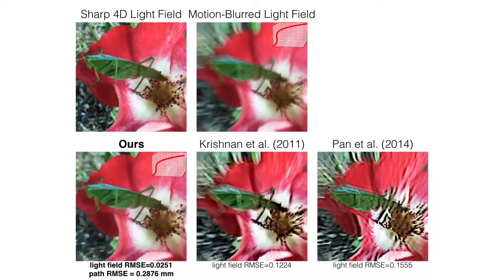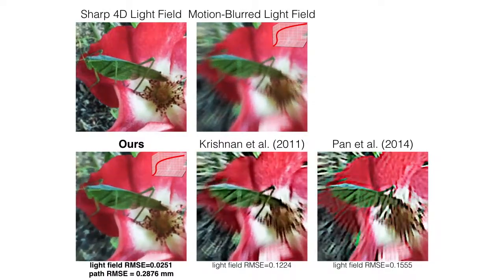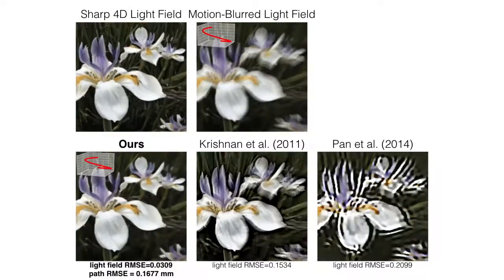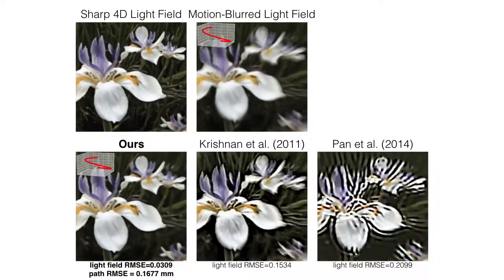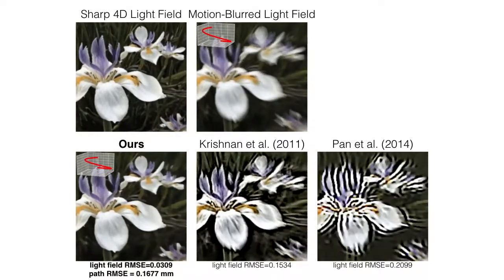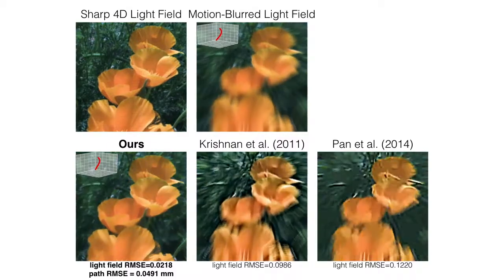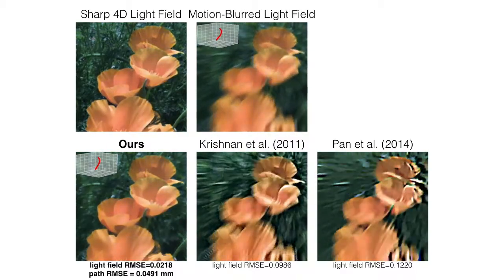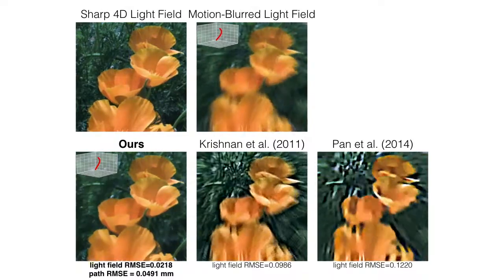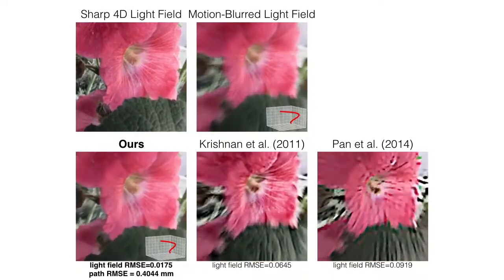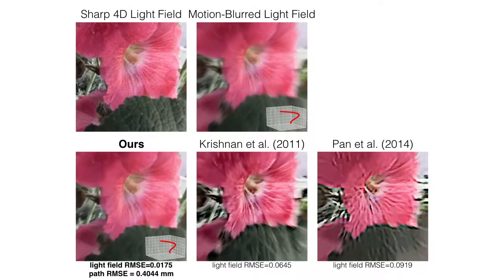We first demonstrate the performance of our algorithm on real light fields taken with the Lytro Illume camera that have been synthetically blurred. We compare our results to the alternative of applying two state-of-the-art blind motion de-blurring algorithms to separately de-blur each sub-aperture image. Our algorithm is able to accurately infer both the sharp light field and the camera motion path from just a single motion-blurred light field. The state-of-the-art single image blind motion de-blurring algorithms are not as successful due to the significant spatial variance of the blur.